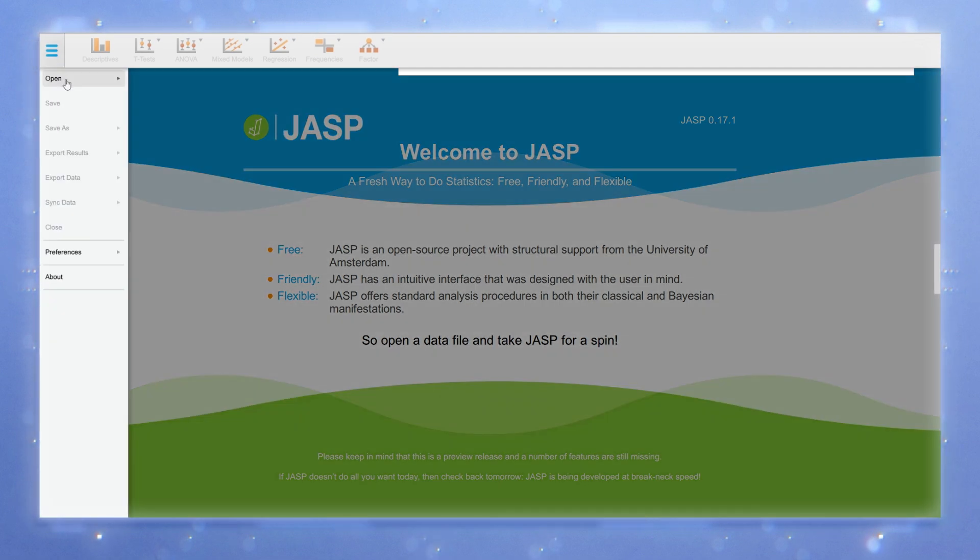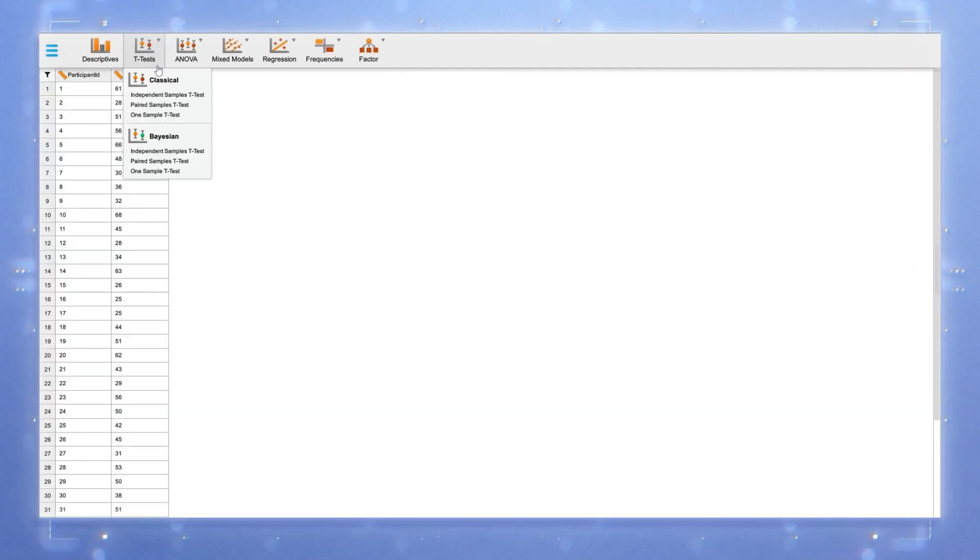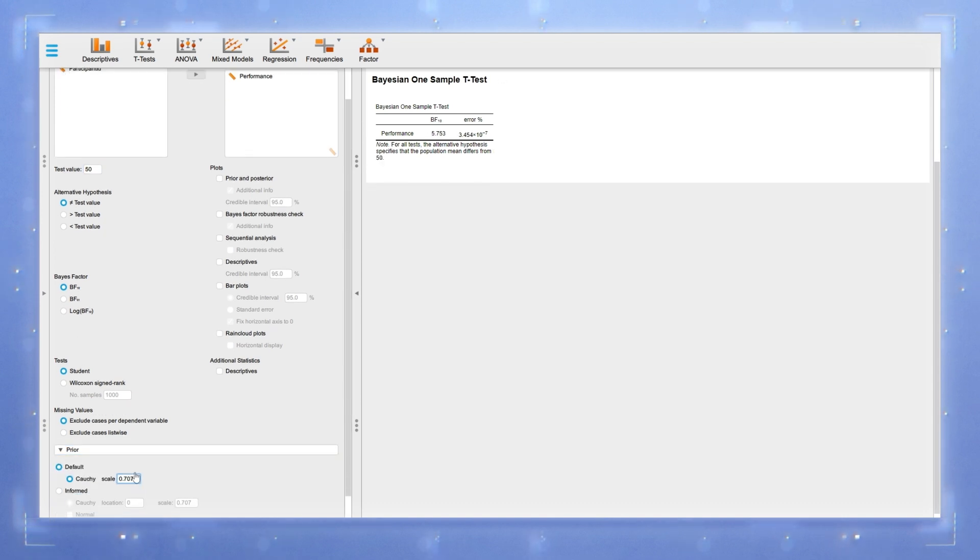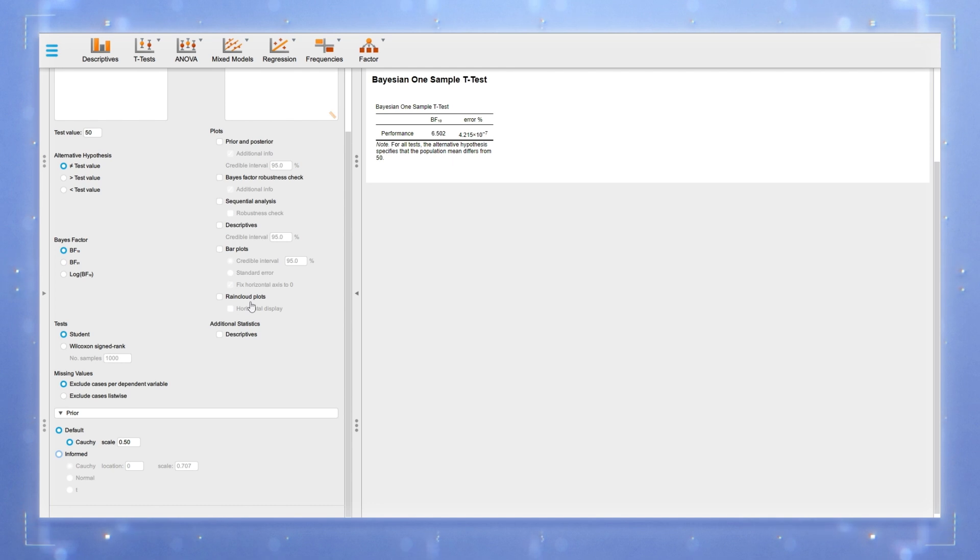We begin by loading the data. We click on the t-test tab and select the Bayesian one-sample t-test. We select which variable to submit to the test. We enter the test value, here 50. Then we click on the Prior tab below and set 0.50 as the scale parameter value and the result pops up immediately.